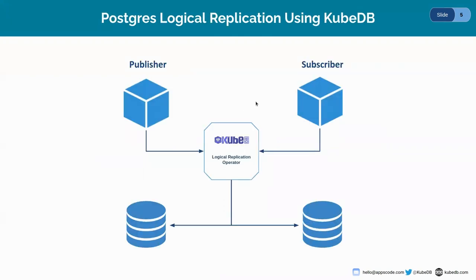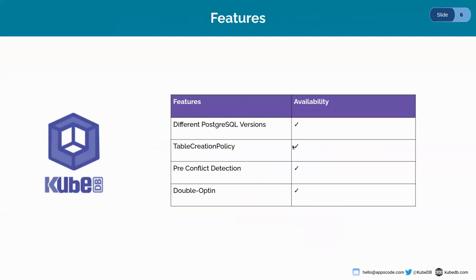Currently we are implementing logical replication in KubeDB. Here we are introducing two CRDs: Publisher and Subscriber. The Publisher CRD will create and maintain publication in a PostgreSQL server using a logical replication operator. And the Subscriber CRD will create and maintain subscription in PostgreSQL server using the logical replication operator.